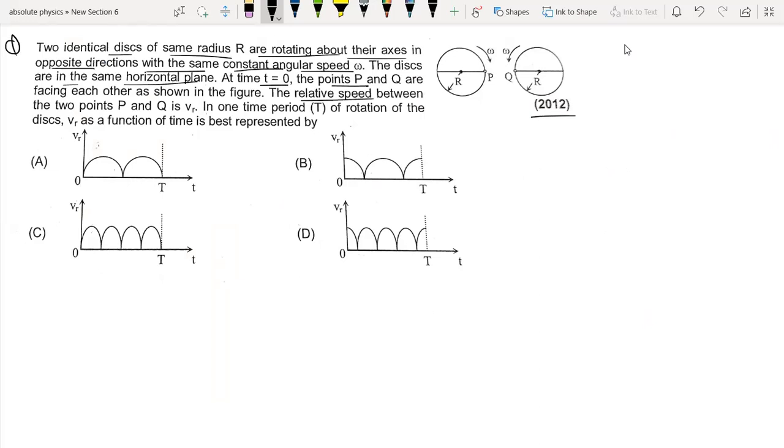VR in one time period T of rotation of the disc, VR as a function of time is best represented by - that means we need to plot it as a function of time. So let's start with the initial conditions.